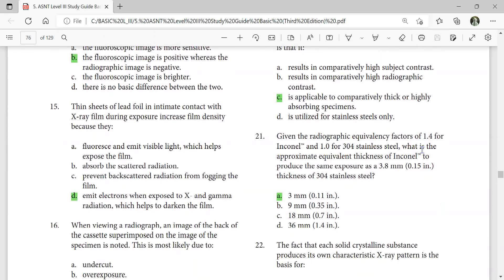Given the radiographic equivalency factors: 1.4 for Inconel and 1 for 304 stainless steel, what is the approximate equivalent thickness of Inconel to produce the same exposure as 3.8 mm thickness of stainless steel? 3.8 divided by 1.4 gives the answer.